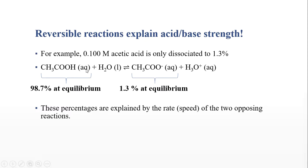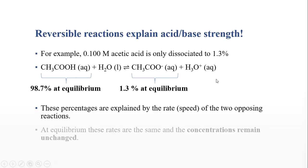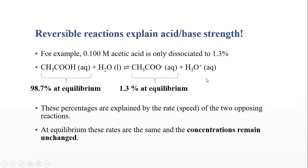We can explain these percentages by the speed of the two opposing reactions. The more we have on the left side, the faster the reaction to the right will go, and the more we have on the right side, the faster the reaction to the left will go. When the speed of the reaction going to the right equals the speed going to the left, we've reached equilibrium — concentrations remain unchanged and the rates are equal.